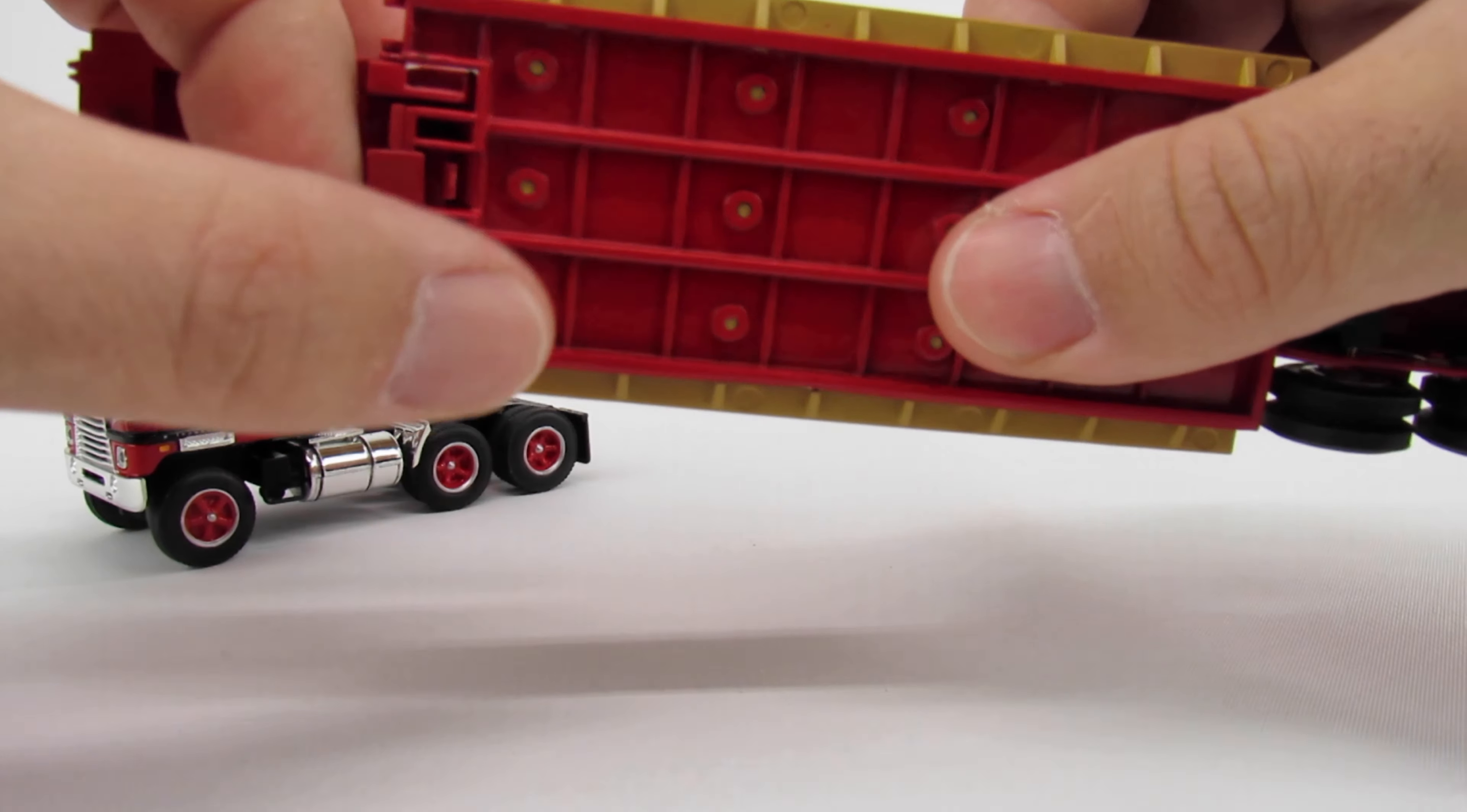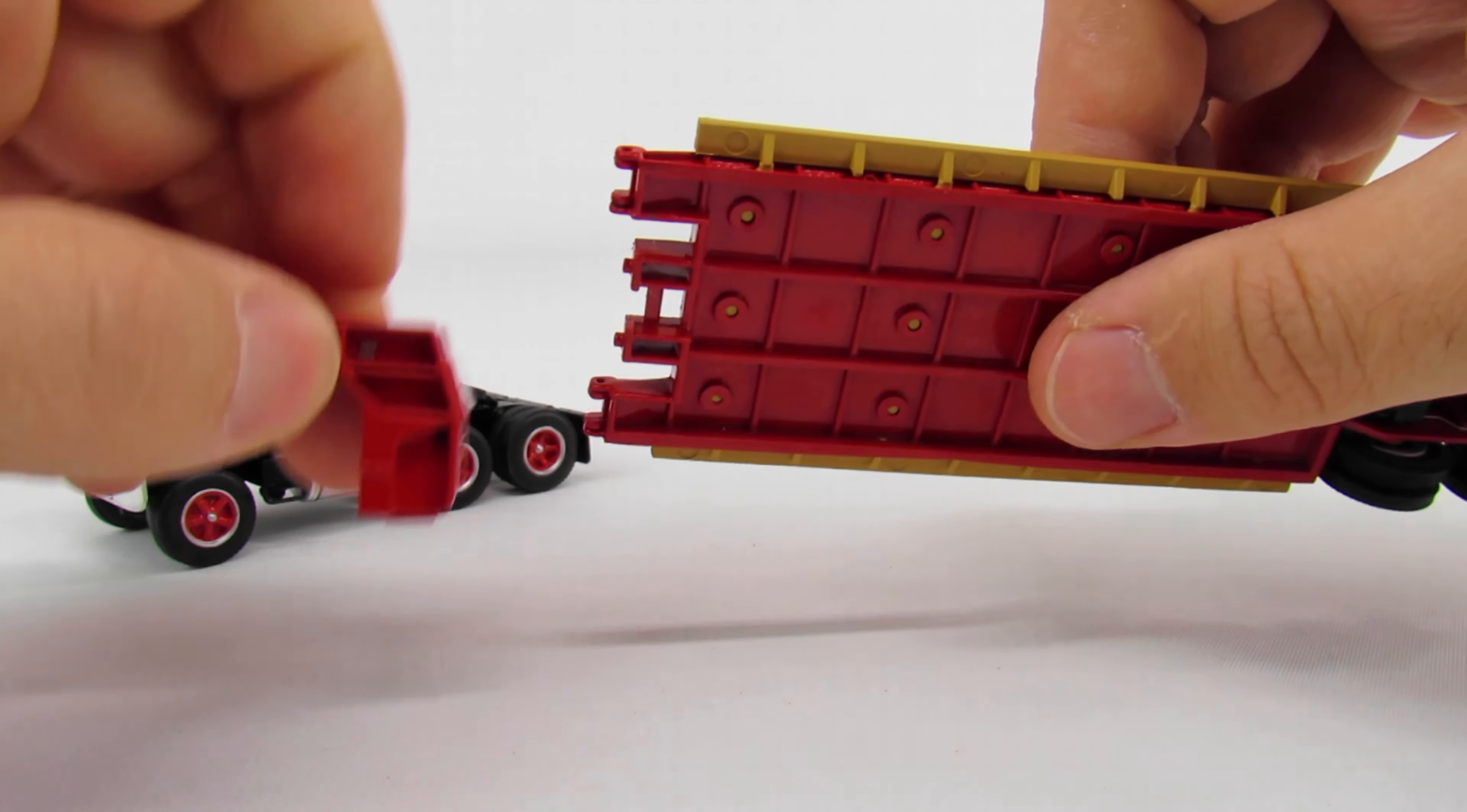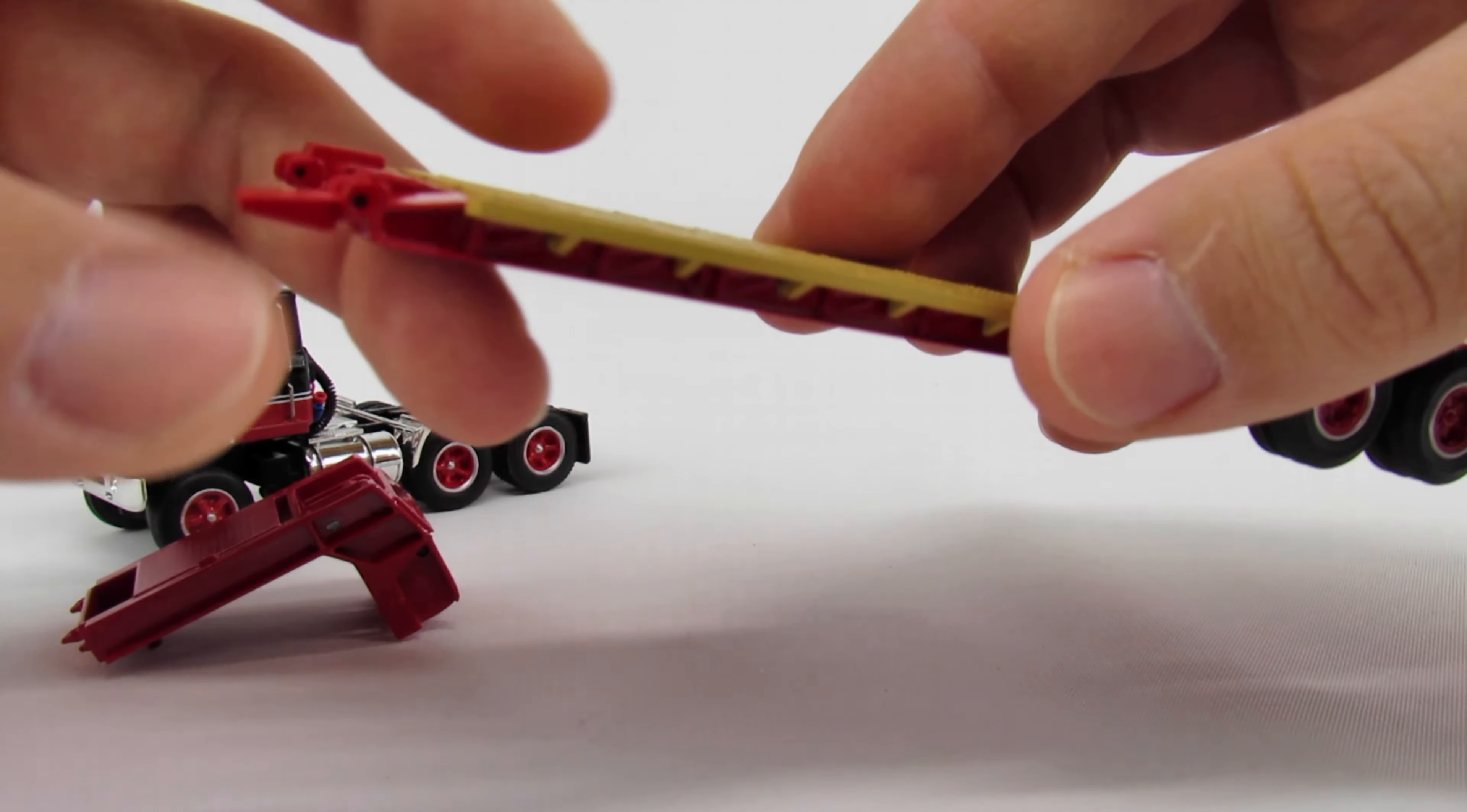You do have a little stabilizer jack for the trailer which is cool. The neck pops off and you do have little ramps to fold down, which is pretty cool. I think that's awesome for 1:64 scale.